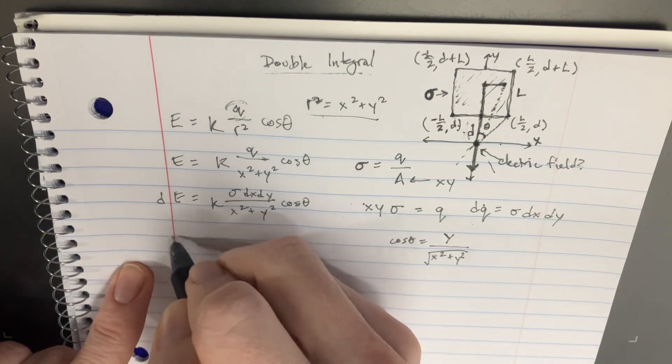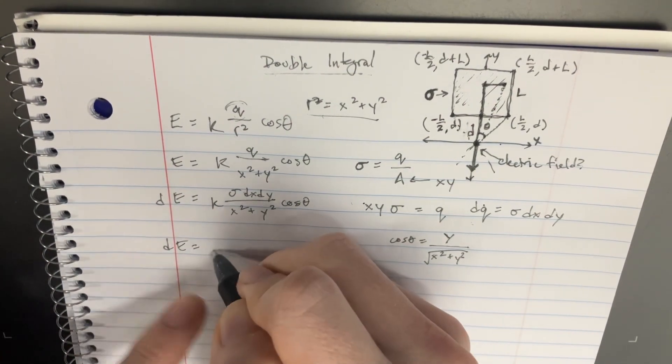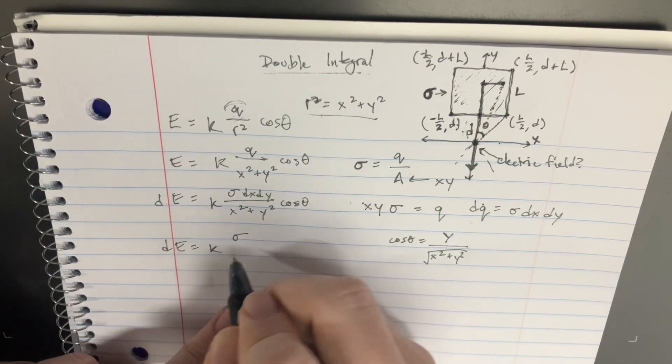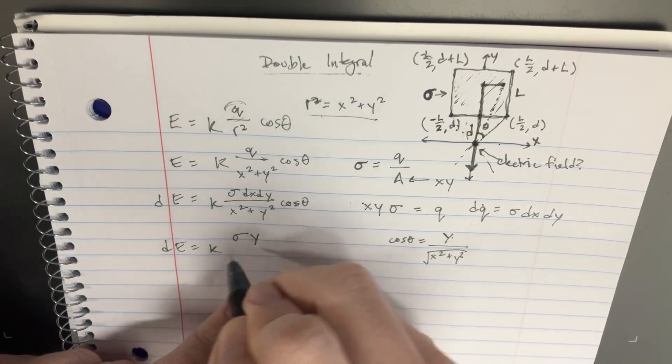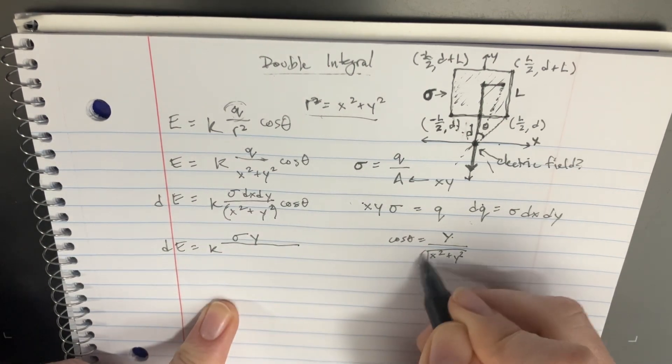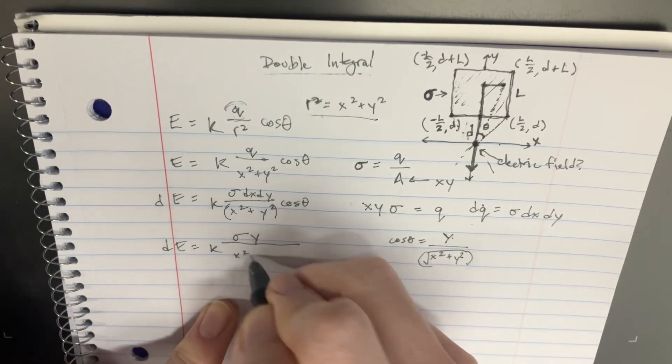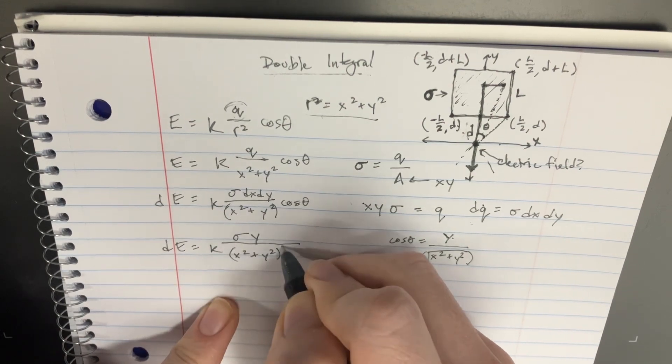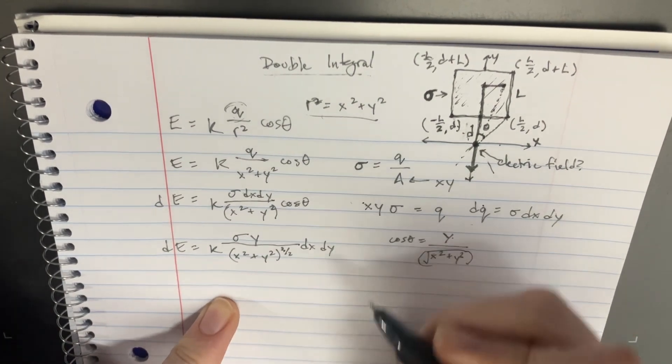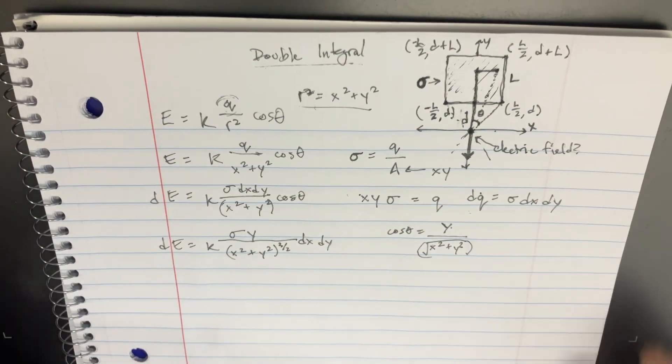So now we can just plug that in there, and we'll get dE equals k. And we have this thing. There's going to be a y on the top, and then we can sort of go like that. And then we can multiply this by this, and we'll be getting x squared plus y squared, 3 over 2 on the bottom. And then we're going to get the dx and the dy right there.